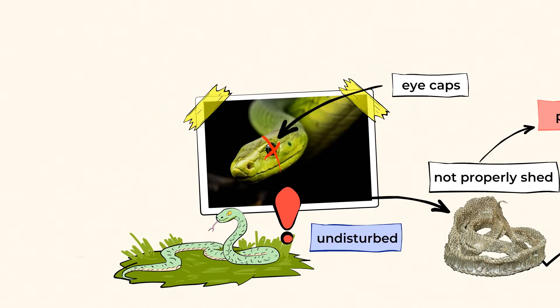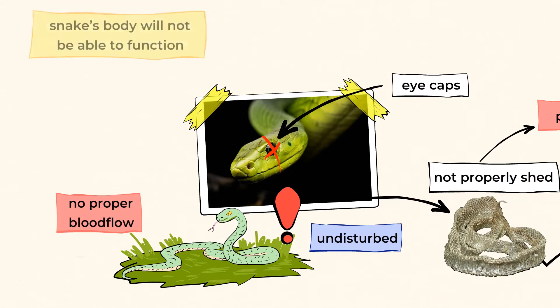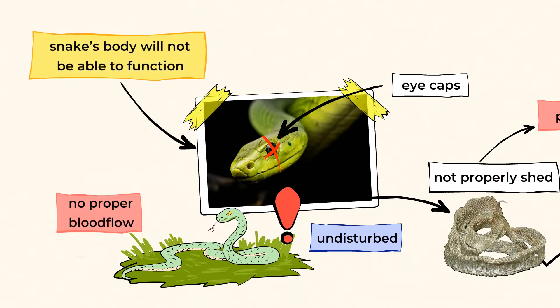Now, if the snake is unable to remove the skin, it could mean that the snake is not getting proper blood flow. And this means that some part of the snake's body will not be able to function. And if a snake's body couldn't function, well, then they might die.